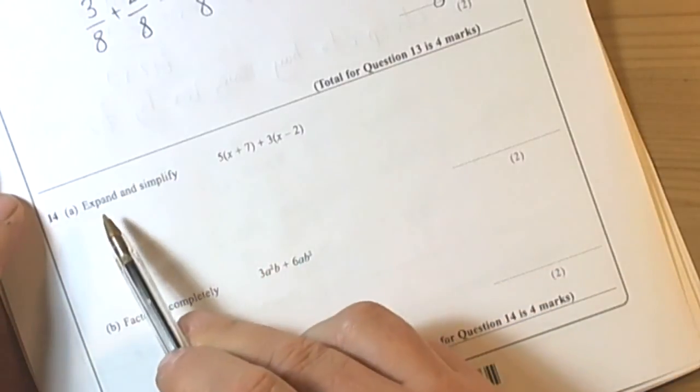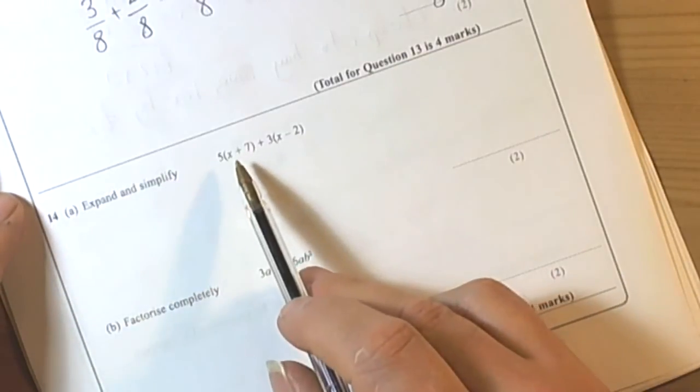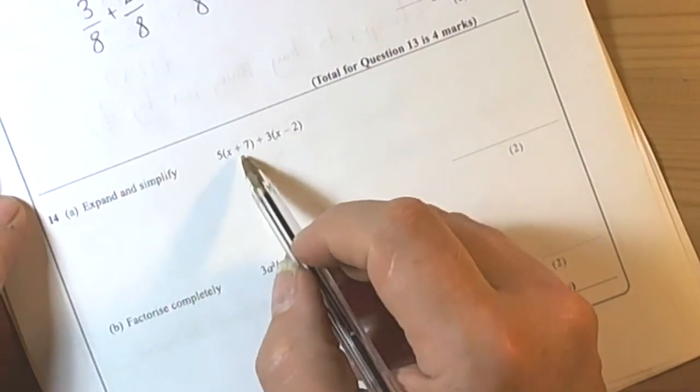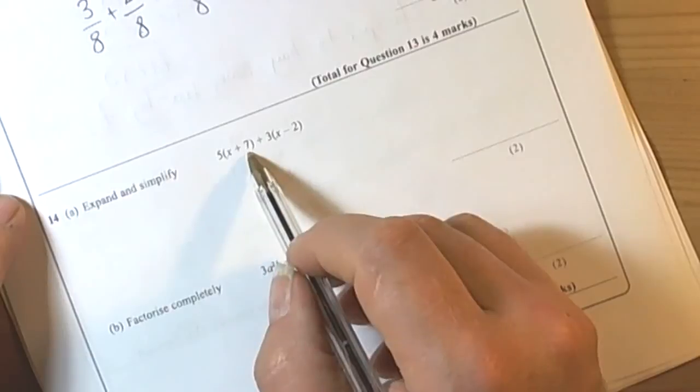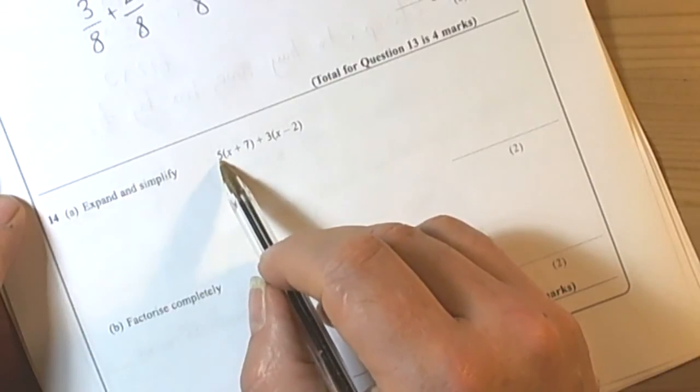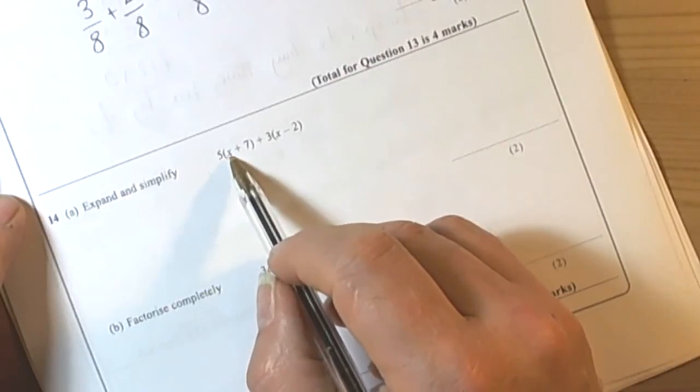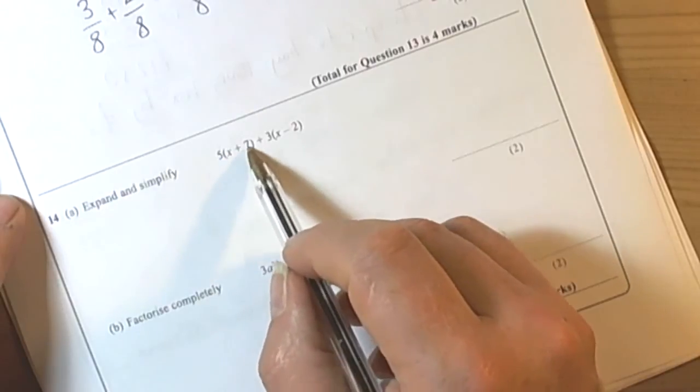This question is asking you to expand and simplify the expression. It's got two parts to it, so if we do the first term bracket, we've got to remember that when we've got a number or a letter outside the bracket, it's telling you to times each term inside the bracket.